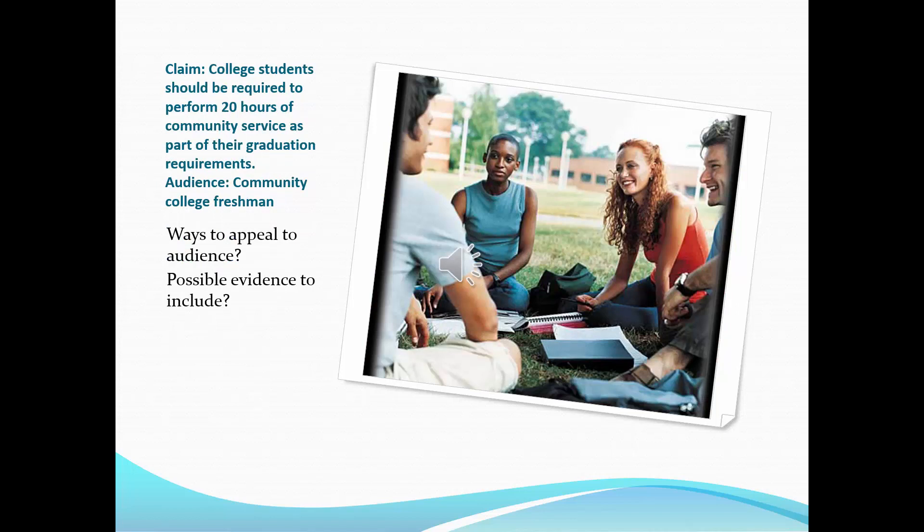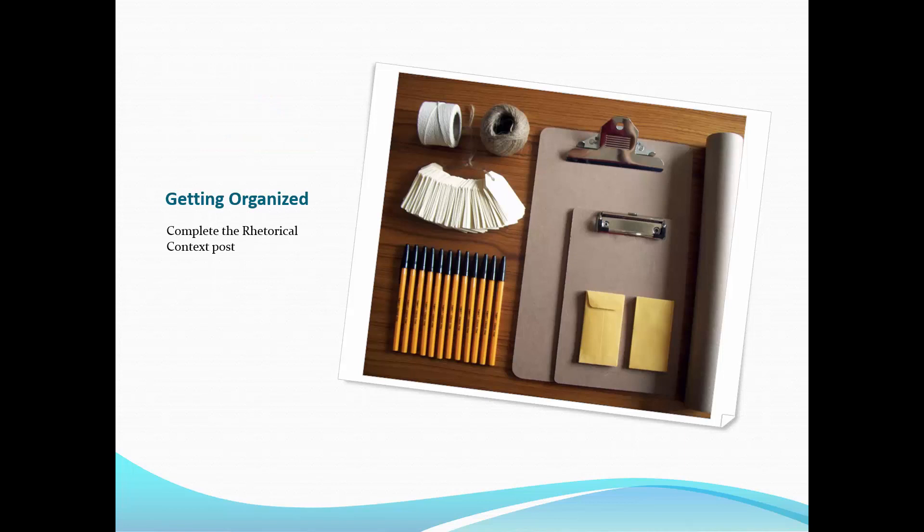I'm not going to go into this last one, but it may be something for you to think up on your own: the claim that college students should be required to perform 20 hours of community service as part of their graduation requirements, with a possible audience of community college freshmen. Again, I'm letting you choose your audience. You're going to have to state in your argument essay — on a separate sheet of paper — who your audience is and where they stand toward your issue. Are they for it? Are they against it? Are they unaware? Try to be as specific as you can about what you know about your audience, and try to avoid the idea that you would target everyone, because that's pretty vague and broad.